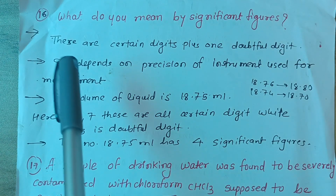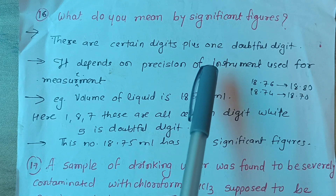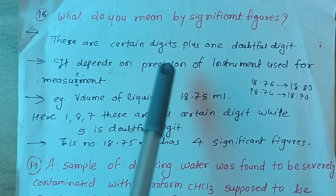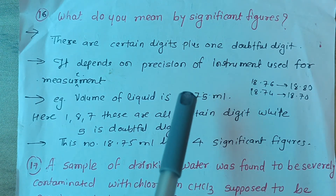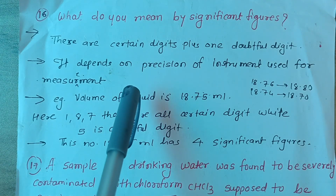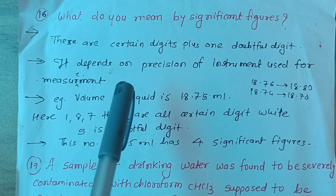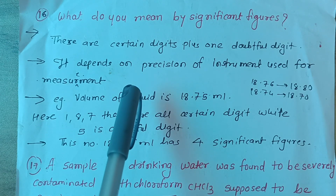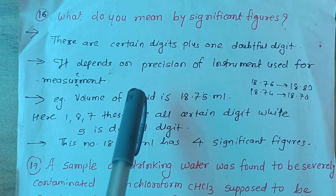Significant figures का मतलब क्या होता है — significant figures वो certain digits होते हैं, उनके साथ एक doubtful digit भी होता है। मतलब कुछ numbers होते हैं जिनके अंदर एक doubtful digit भी आता है, जो ज्यादातर हम जिस measurement के लिए जो instrument use कर रहे हैं उसकी precision पर depend होता है — कितनी accuracy है उस instrument की।